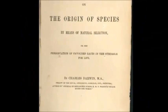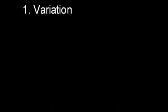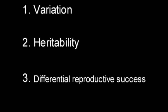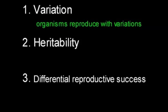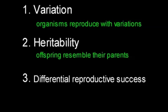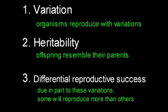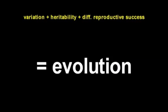Evolution by natural selection is based on three simple ideas: 1. Variation. 2. Heritability. 3. Differential reproductive success. In other words, organisms reproduce with variations, those offspring tend to resemble their parents, and some of them will reproduce more than others. If you've got those, you've got evolution. This process explains the unity and diversity of living things today.